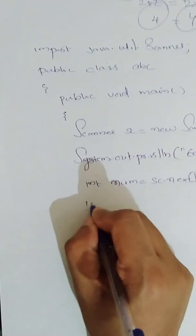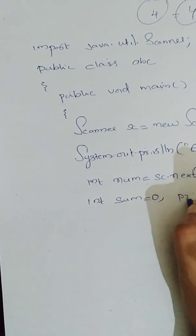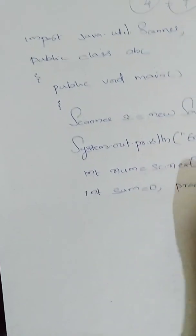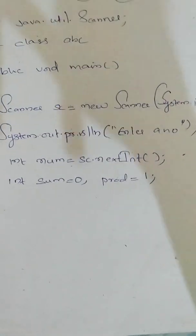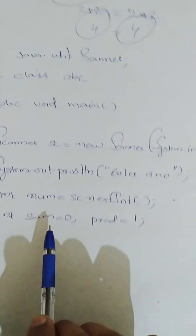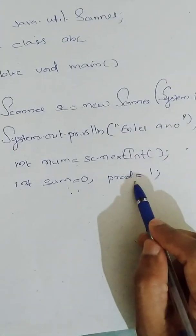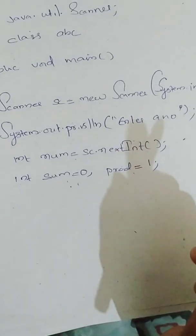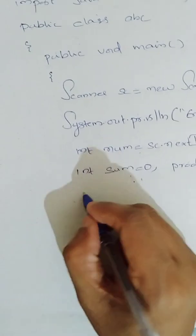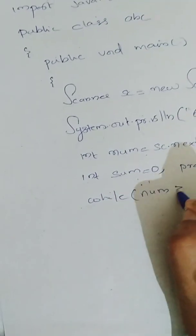Next, we will declare a variable for sum and a variable for product. Here I am assigning sum is equal to 0, product is equal to 1. Why? Because any number plus 0 gives that number. But any number into 0, 0 will come. So that is why we are assigning product is equal to 1.